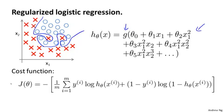This was our cost function for logistic regression. And if we want to modify it to use regularization, all we need to do is add to it the following term: plus lambda over 2m, sum from j equals 1, and as usual, sum from j equals 1 rather than sum from j equals 0, of theta j squared.